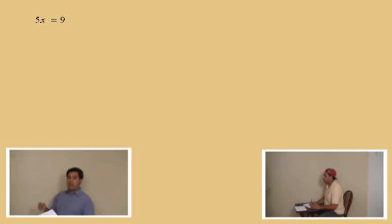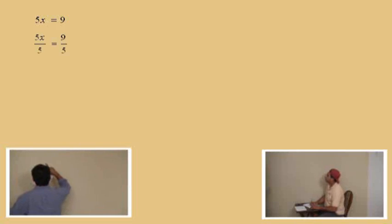Since we have 5x there, we are going to divide both sides by what, Charlie? 5. Okay, by 5. And so let's go ahead and show that, okay? In another step, right here, we're dividing both sides by 5. Now, why do we divide by 5, Charlie? What is 5 divided by 5? 1.